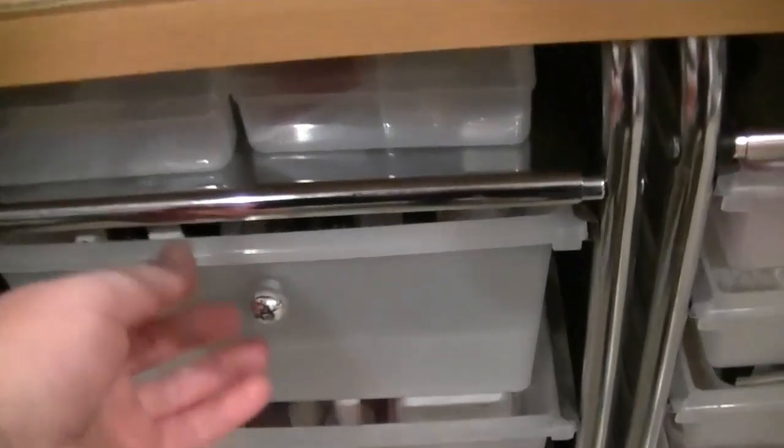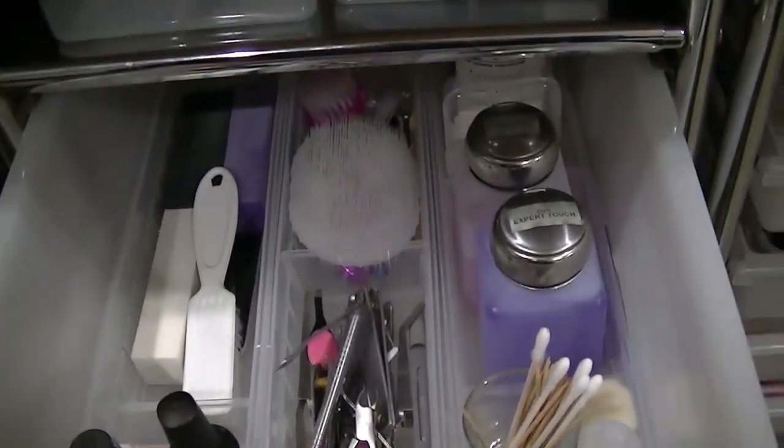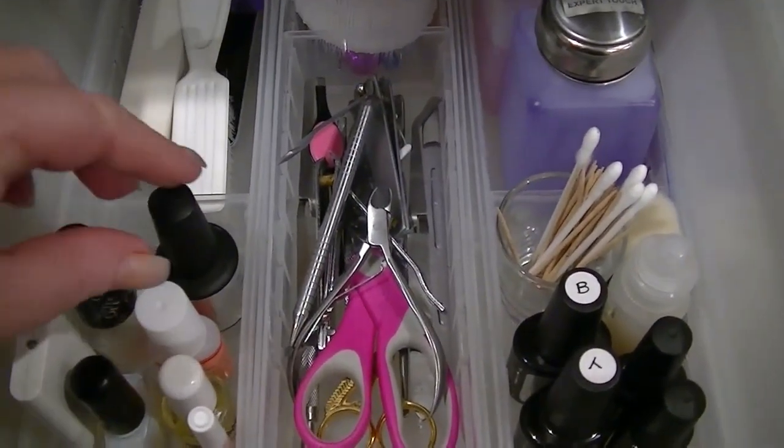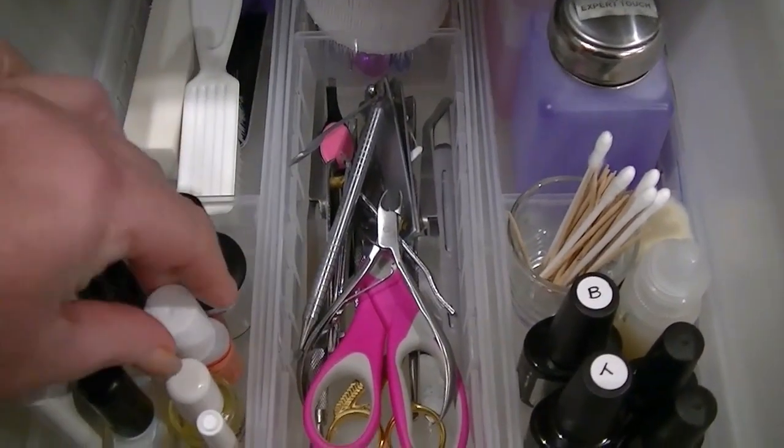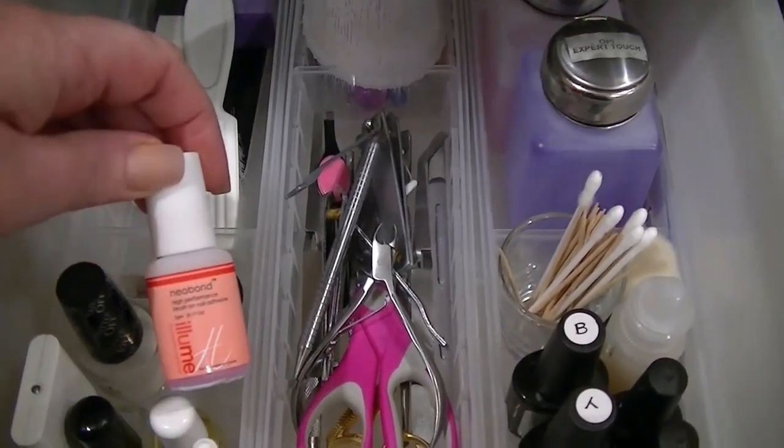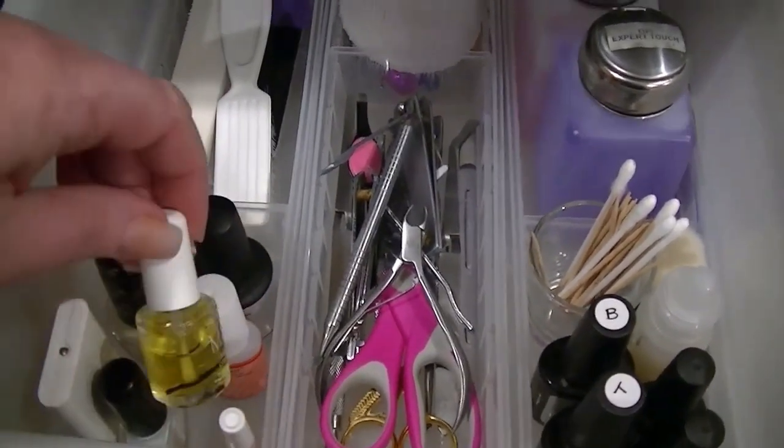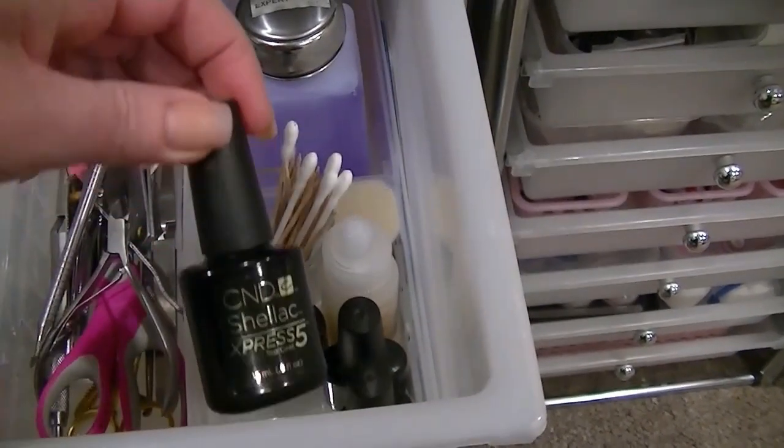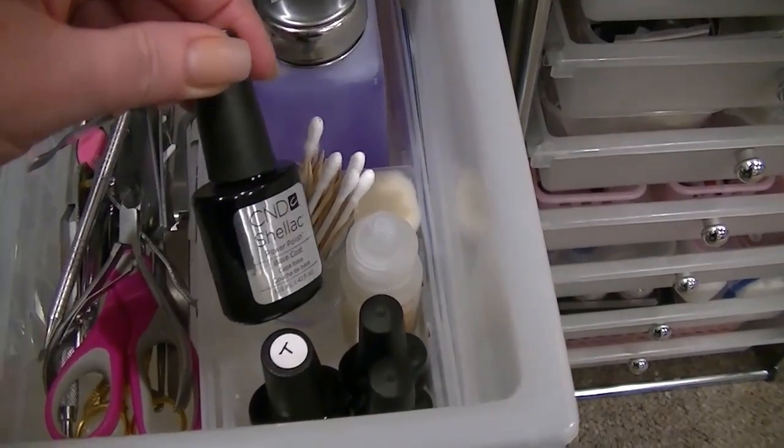In the bottom drawer I keep my salon towels. In this top drawer is all of the implements and products that I use on a regular basis. It's quite easy to get to the top drawer on the right-hand side. I have all of my glues, my implements, my buffers, my brushes, my gel top coat and base coat, finishing products and things like that.